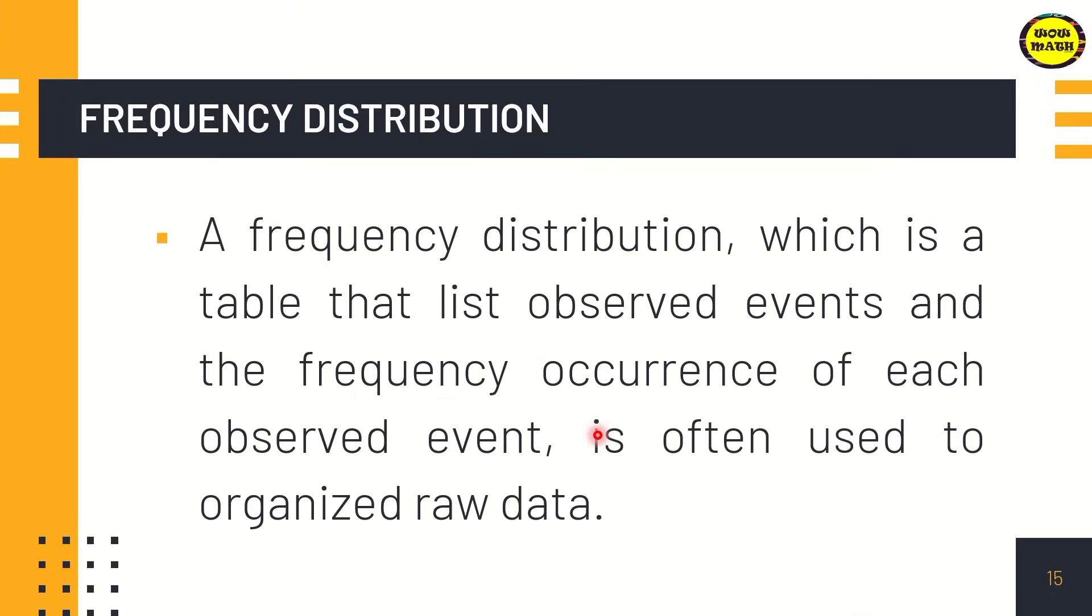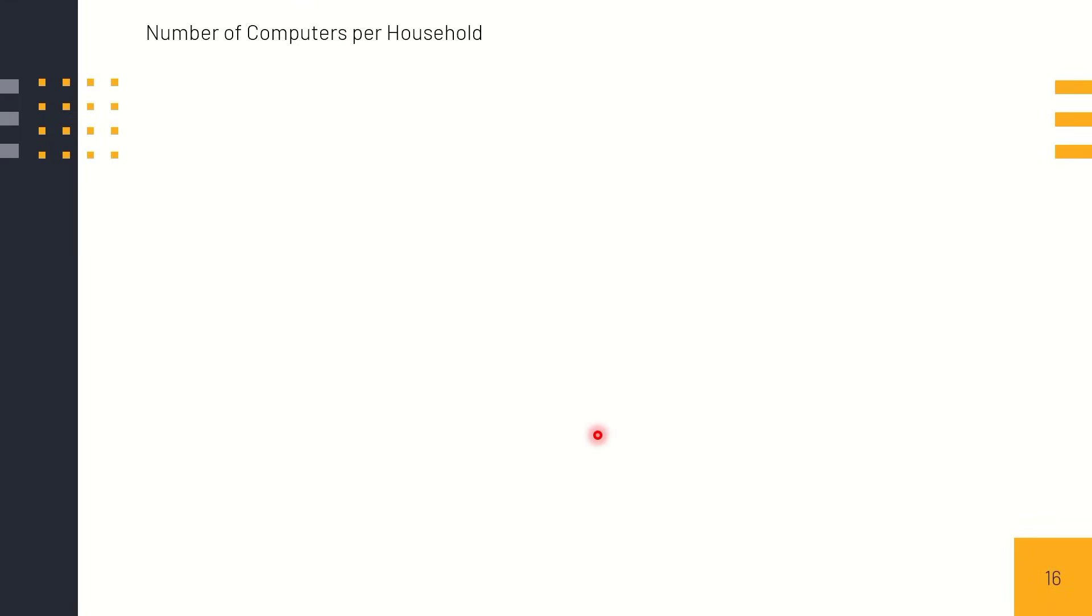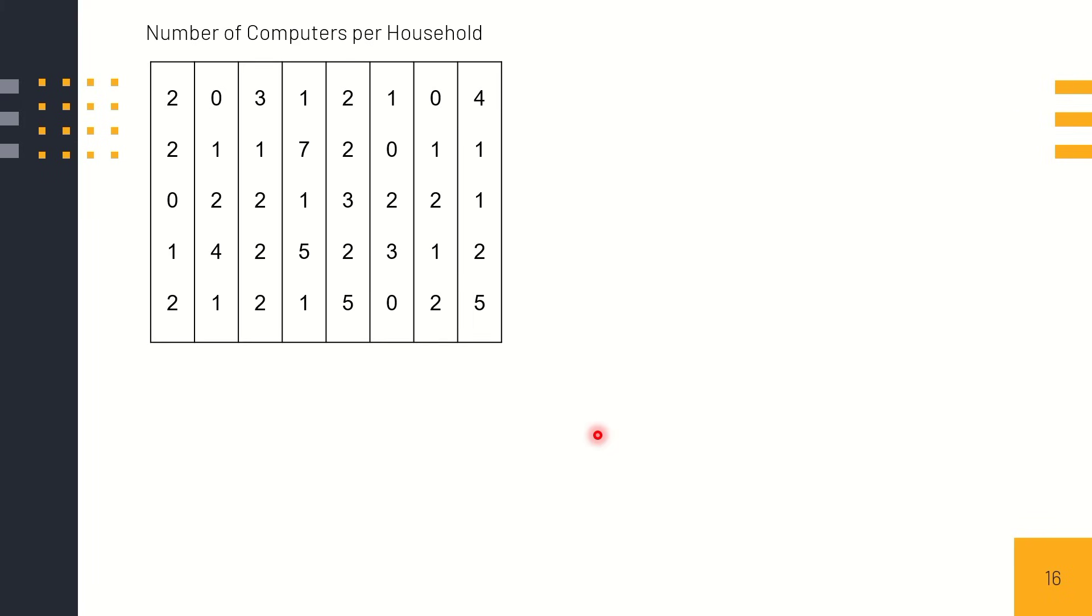A frequency distribution is a table that lists observed events and the frequency of occurrence of each observed event, and is often used to organize raw data. You can use frequency distribution when you have many given data sets, like more than 50 or up to 100 given data. If you arrange that by ascending order, it would be very long. This is another way to organize the data set. For example, you conduct a survey asking the number of computers per household from 40 households. We're going to find the mean of the data set, so we need to use frequency distribution to present the data set into tables.